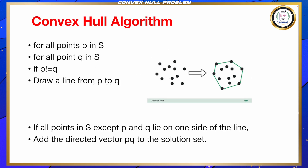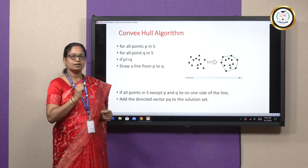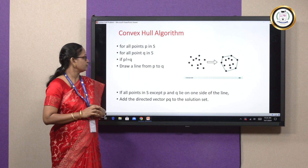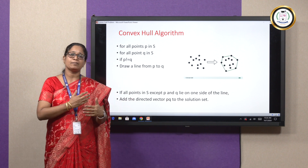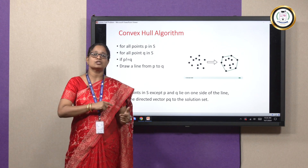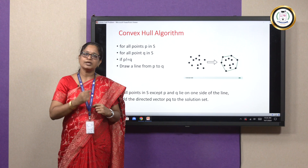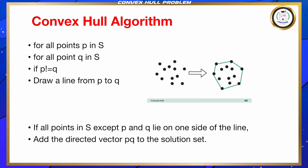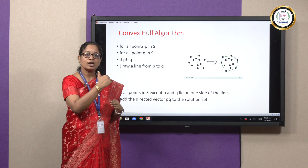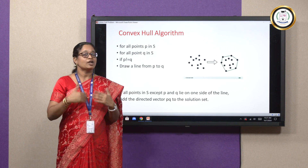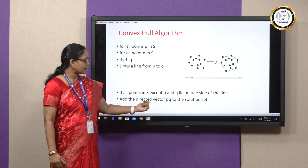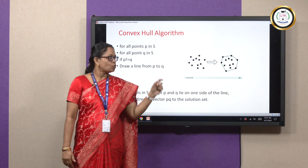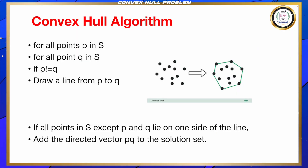Here is a very simple algorithm for convex hull. Given a set of points in a plane, for all points P in the set S and for all points Q in S, if P is not equal to Q — that is if P belongs to a separate set and Q belongs to a separate set — then you can draw a line segment from P to Q. The next is a very important step: if all the points in the set S except P and Q lie on one side of the line, that means none of the points are above the line, you can add the directed vector P to Q to the solution set. When you connect P and Q in such a way, you will get a convex polygon.